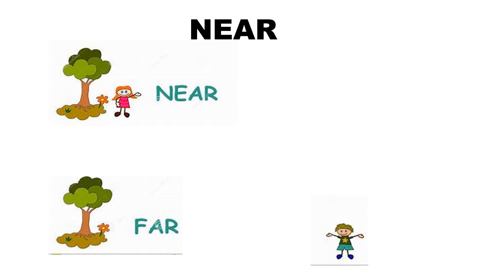In this picture, you can see a girl standing near a tree. N-E-A-R. Near. What about this picture? The boy is far from the tree. F-A-R. Far. Near. Far.